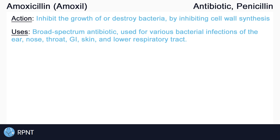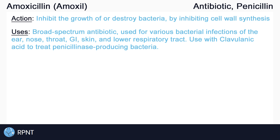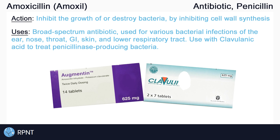To counter this, amoxicillin is often administered as a combination drug with clavulanic acid. Clavulanic acid is a chemical that blocks penicillinase and allows amoxicillin use in penicillinase-producing bacteria. Together, amoxicillin and clavulanic acid are also known as Augmentin or Clavulin.